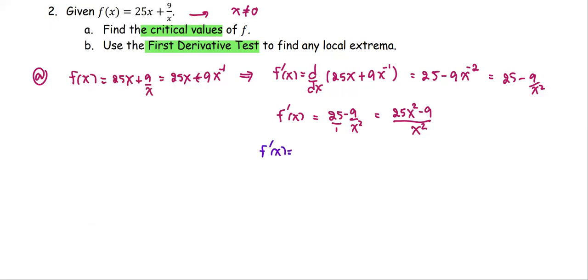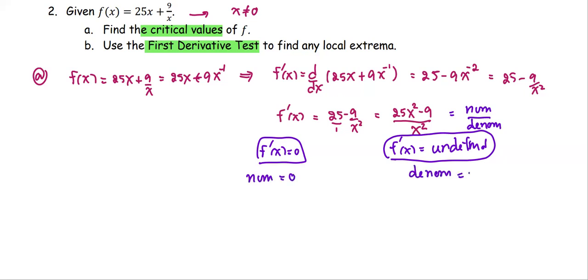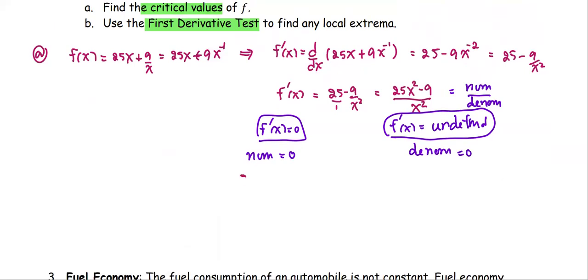The case at f prime equals 0, and the case at f prime is undefined, because the derivative 0 means the slope is 0, so we're going to look at the numerator equals 0, and the undefined means the denominator equals 0. The numerator 25x squared minus 9 equals 0, gives us 5x minus 3, 5x plus 3 equals 0, or x equals 3 over 5 and negative 3 over 5, both of them not 0, so we keep both of them.